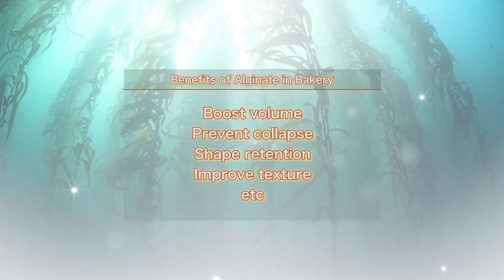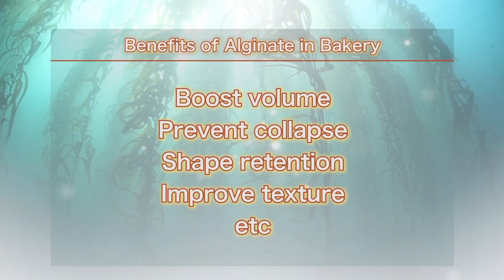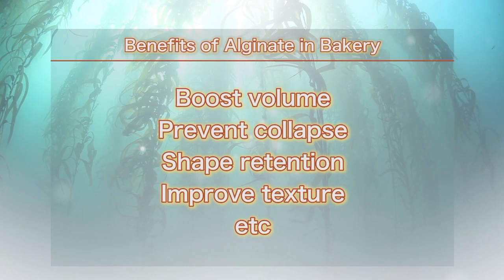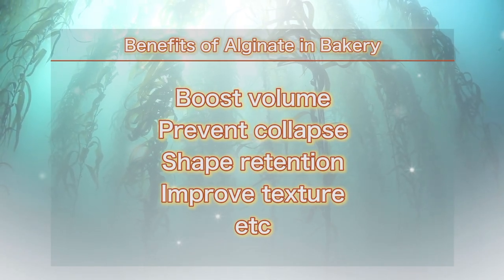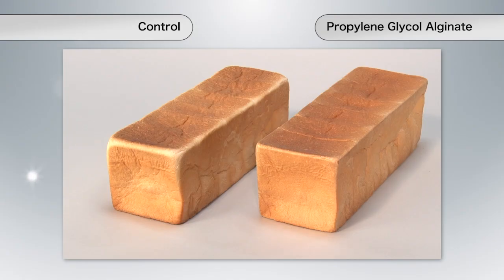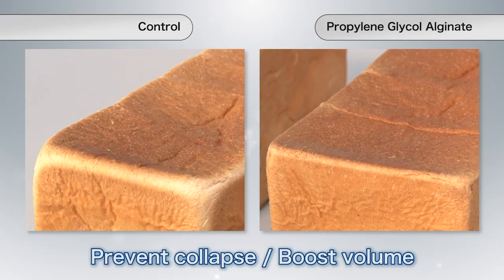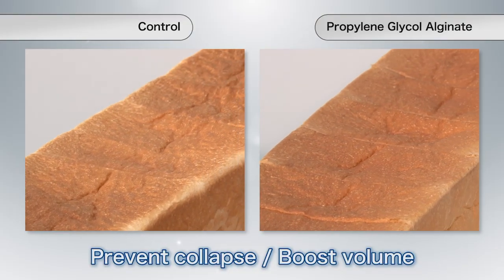In bread making, alginate is used to boost volume and prevent collapse. These breads have just been baked. As you can see, the addition of alginate increases volume and prevents collapse.